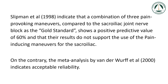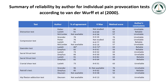Slipman et al. 1998 indicate that a combination of three pain-provoking maneuvers compared to the sacroiliac joint nerve block as the gold standard shows a positive predictive value of 60%, and that their results do not support the use of the pain-inducing maneuvers for the sacroiliac joint. On the contrary, the meta-analysis by Van der Werf et al. 2000 indicates acceptable reliability, showing acceptable reliability for five pain provocation tests. However, since other authors have described contradictory results, there is a need for more research on sacroiliac joint pain provocation tests.